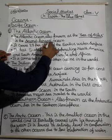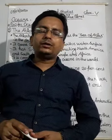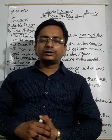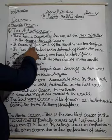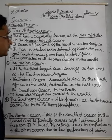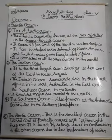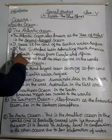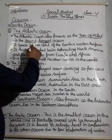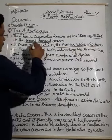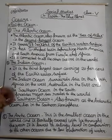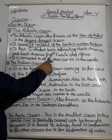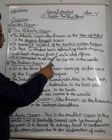My dear students, if anybody asks you which one is the largest ocean of the world, that will be Pacific Ocean. And the deepest point of the Earth is Mariana Trench in Pacific Ocean. The second largest ocean of the world is Atlantic Ocean. It covers 29% of the Earth's water surface.